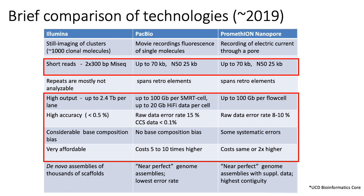Here's a slide that gives a brief comparison of the three major technologies we'll talk about in this class. The main differences are that Illumina technologies generally have a much higher throughput compared to PacBio and nanopore — meaning they can produce a larger overall amount of sequencing reads. Illumina also tends to have higher overall accuracy, meaning a lower error rate.